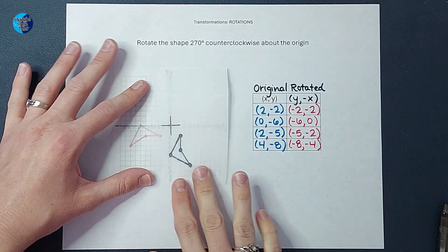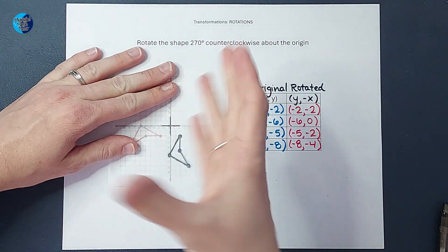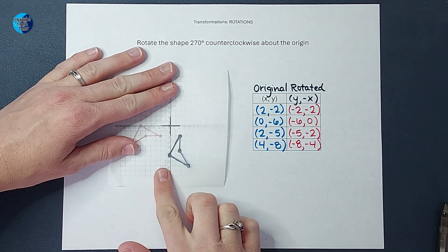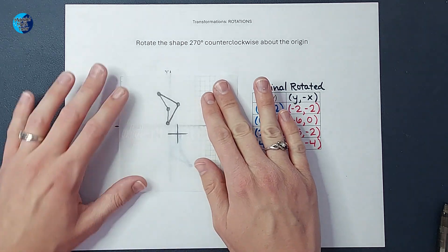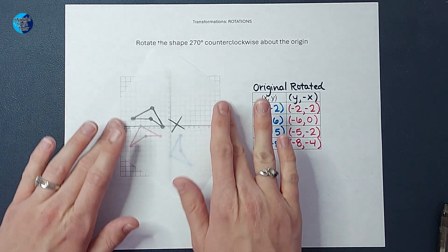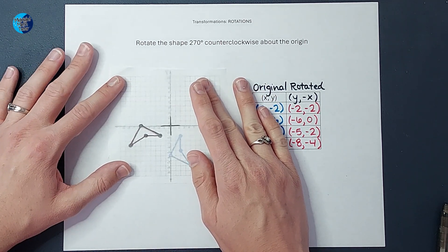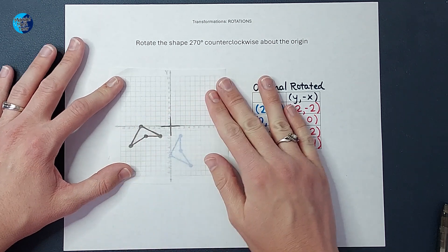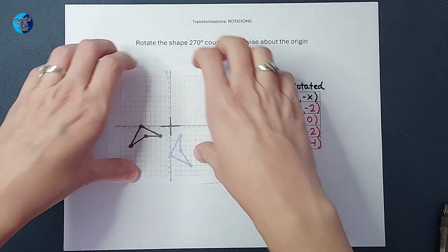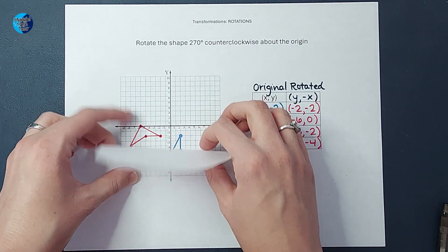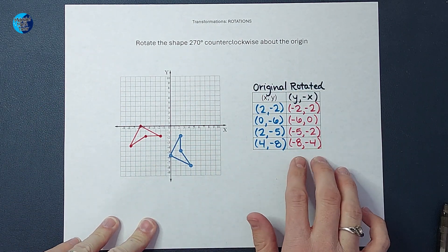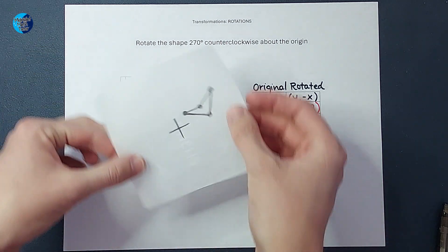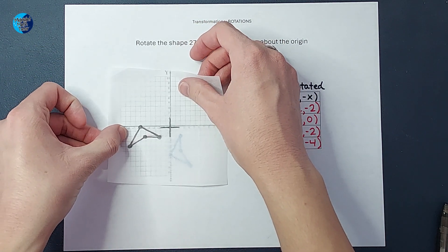Counterclockwise is that way. So 270 is three quarters of 360. So I'm going to go, that would be 90, 180 and 270. Oh, look how nicely that lines up. So I'm feeling pretty confident that I did this correctly. And you could see why when we did that switcheroo and changing the signs that it lined up when we physically turned it.